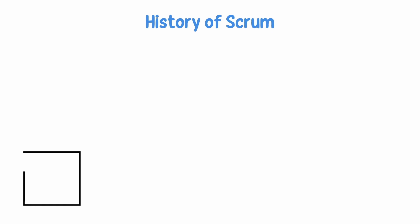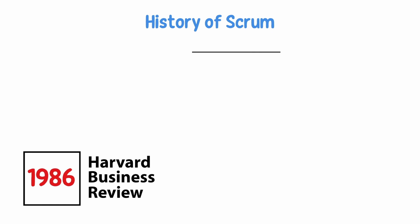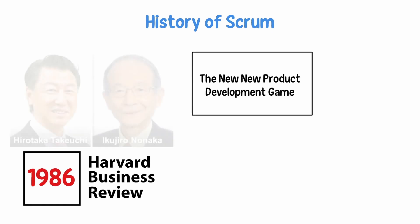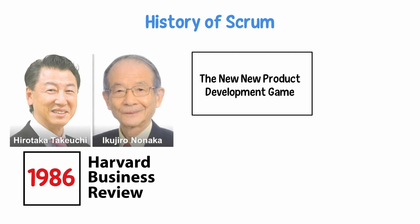History of Scrum. In their 1986 Harvard Business Review article, "The New New Product Development Game," Hirotaka Takeuchi and Ikujiro Nonaka introduced the term Scrum in the context of product development.